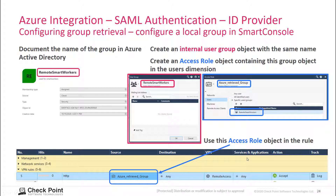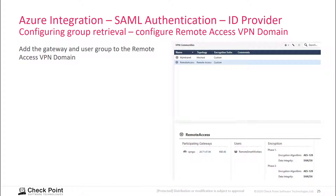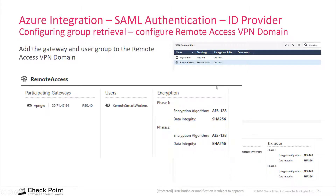This configuration step is necessary because we are working with R80.40, which does not support the Azure Graph API to automatically read user and group objects from Azure Active Directory. Then configure the VPN community for remote access, adding your security gateway and the internal group in the relevant fields.